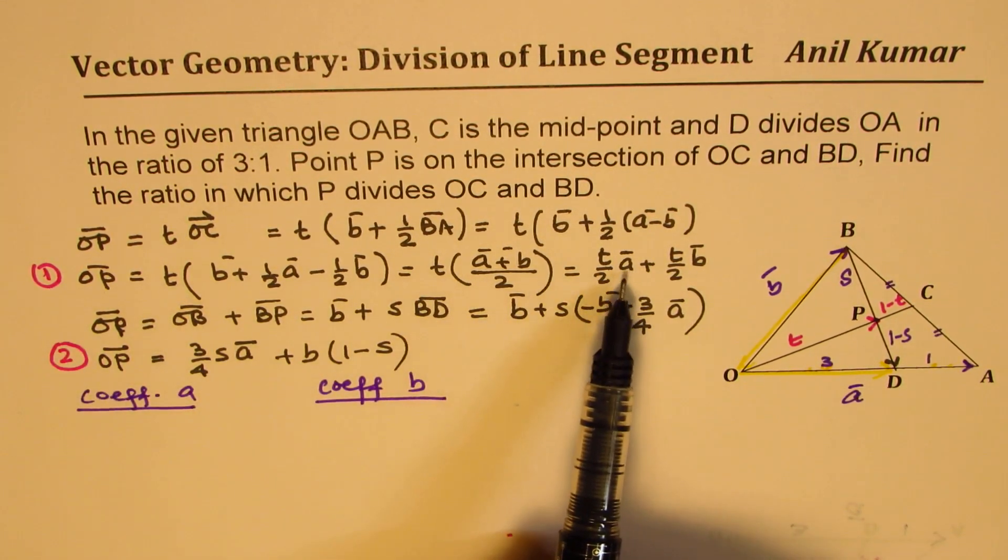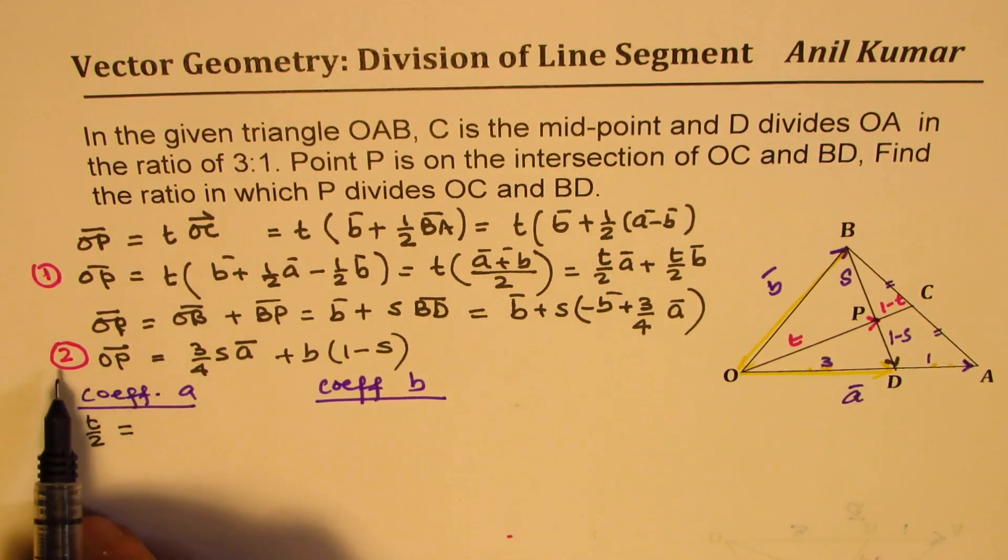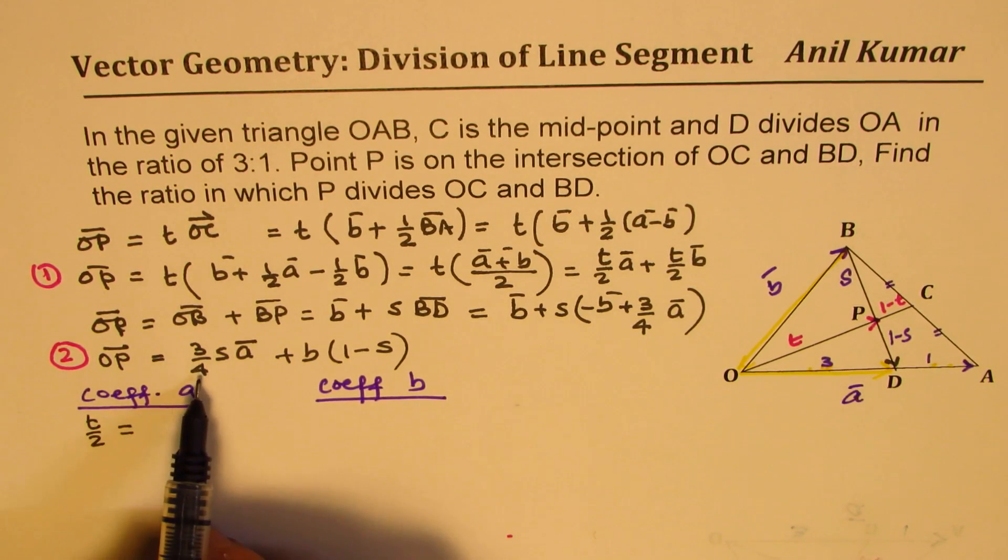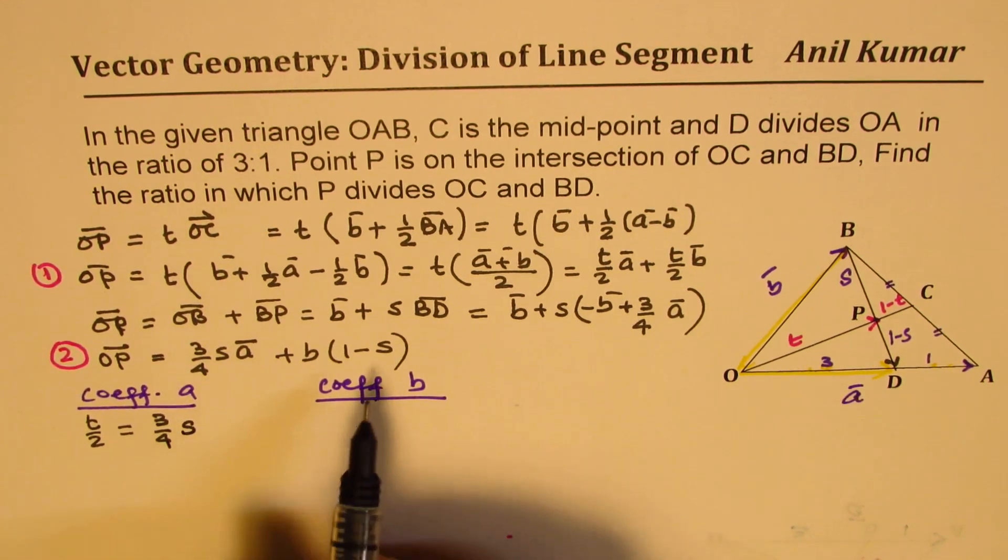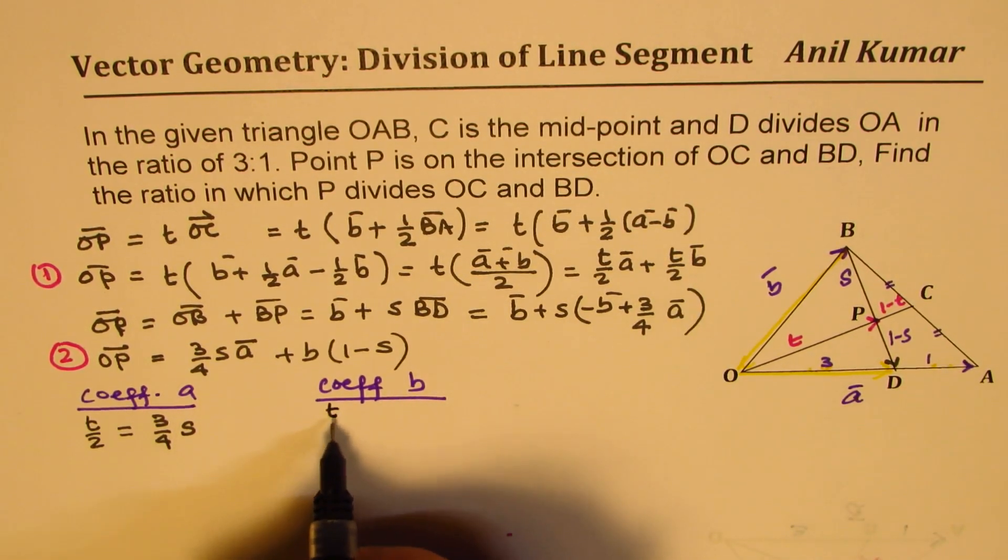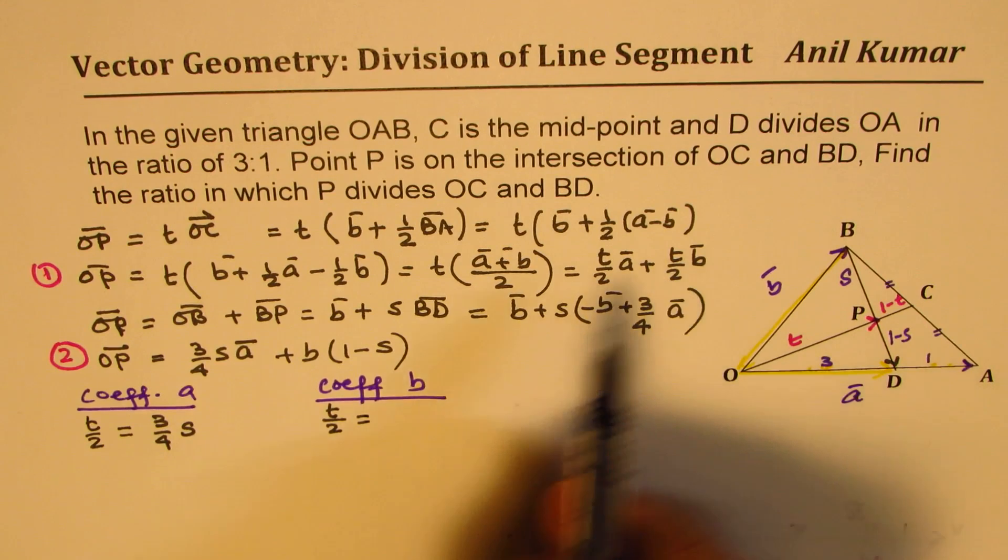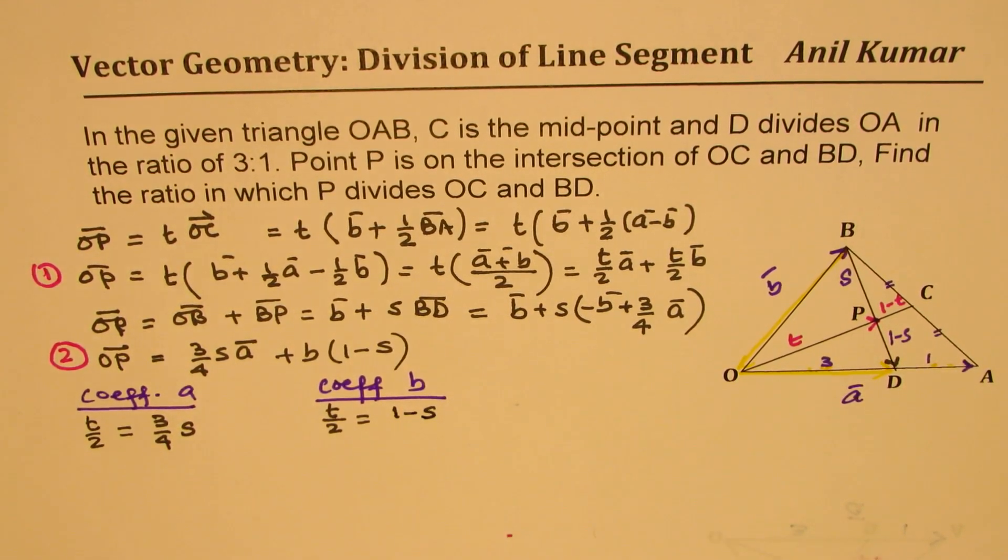We compare these two coefficients to get our equations and we will solve them. So, in equation 1, the coefficient of A is T by 2. So, we get T by 2 should be equal to, in equation 2, it is 3 over 4S. For coefficients of B, it is T by 2 for B and here it is 1 minus S.